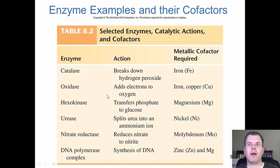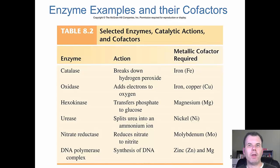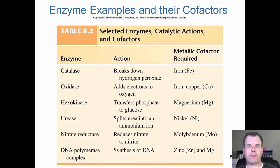Examples: catalase breaks down hydrogen peroxide; oxidase adds electrons to oxygen; hexokinase transfers phosphate to glucose; urease splits urea into ammonium; nitrate reductase reduces nitrate to nitrite; DNA polymerase builds DNA. Each enzyme has one role — they don't go off and do other things. One tool for one job. Many also require cofactors, the battery pack that allows them to function.